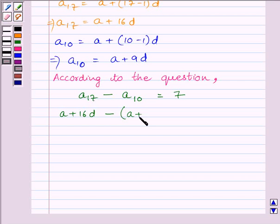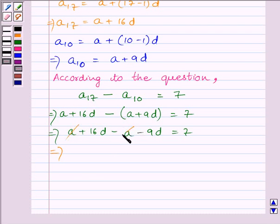So we can write A plus 16D minus (A plus 9D) equals 7. This implies A plus 16D minus A minus 9D equals 7. Now A and A will get cancelled.